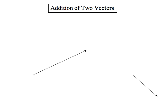let's call this one A, is that you take the tail of one vector and put it at the head of the other.